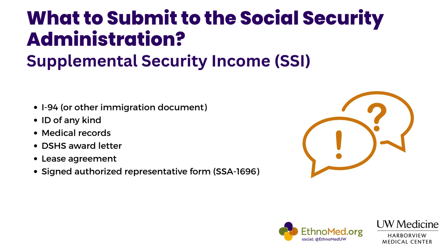A copy of the lease agreement is also needed. If your client is living with family and isn't officially on a lease, Social Security will accept just a typed-up brief statement stating how much your client is expected to pay for rent every month, signed by both parties. Otherwise, they just need the portion of the client's lease agreement that states their address and how much the family is paying per month. And then finally, submitting the signed authorized representative form, also known as SSA 1696.